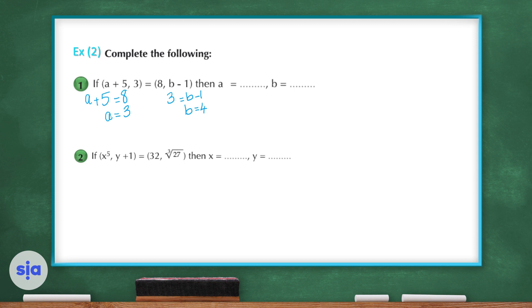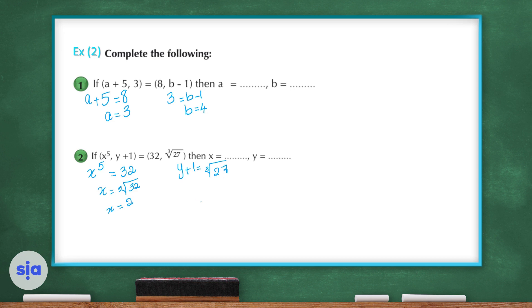For question 2, we have two equal ordered pairs and we need to find x and y. X values are equal: x to the power of 5 equals 32. To remove the power of 5, we take the fifth root of both sides, so x equals the fifth root of 32, which equals 2. For y: y plus 1 equals the cube root of 27, so y plus 1 equals 3, giving y equals 2.